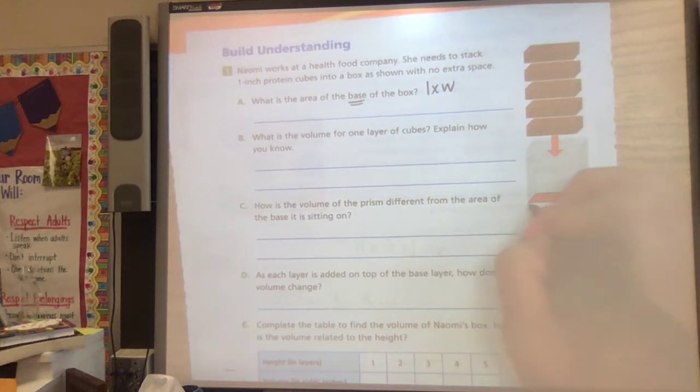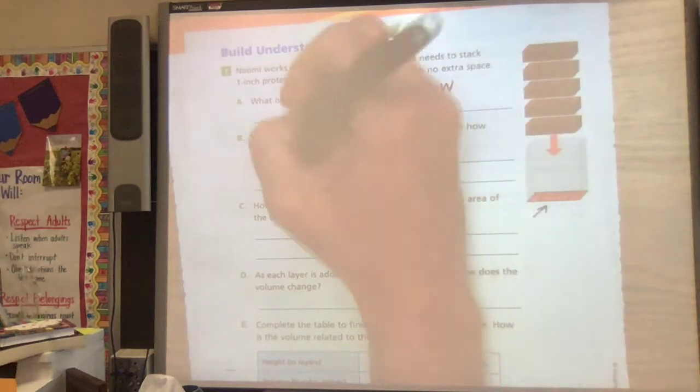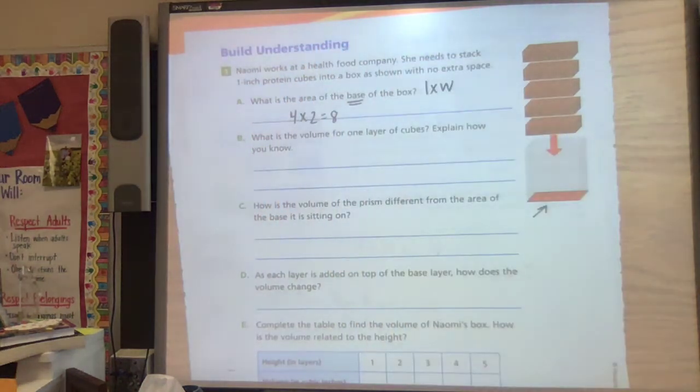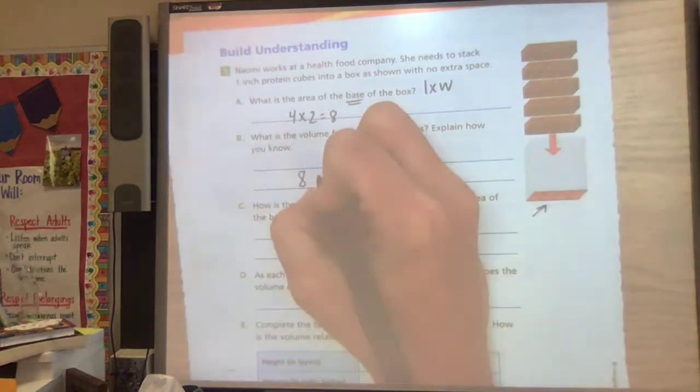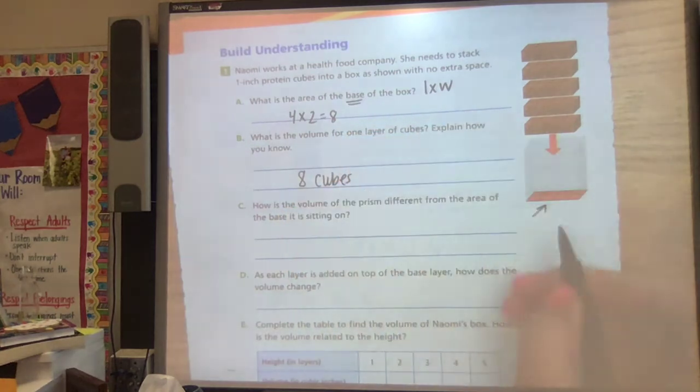So we can look at the base and I see it's four units long and two units wide, so 4 times 2 is 8. What is the volume for one layer of cubes? One layer. Well, I know the bottom is eight cubes, so each layer is eight.